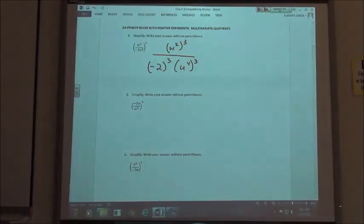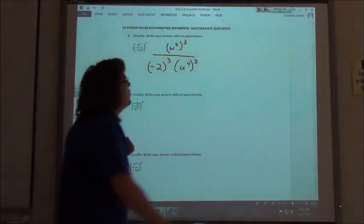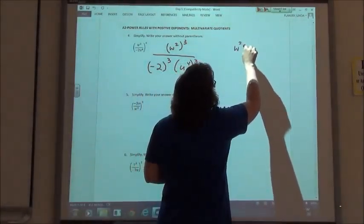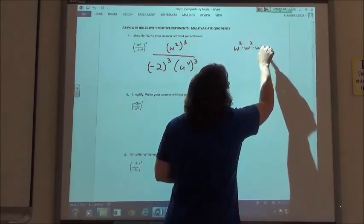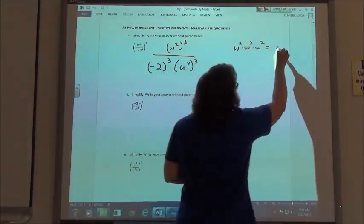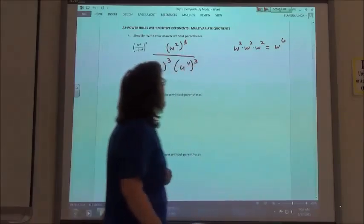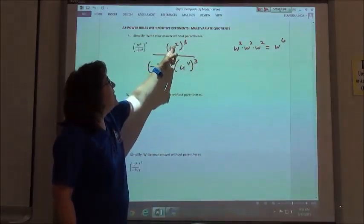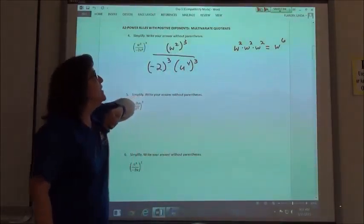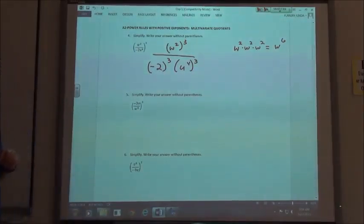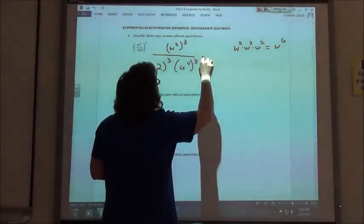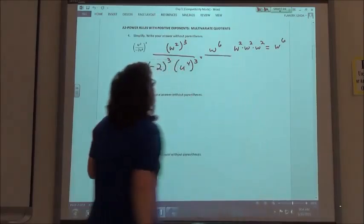So we said with our power rule, w squared to the third power means I'm taking w squared times w squared times w squared. I add my exponents there and I get w to the sixth power. My power rule says if I'm raising to a power, I can just go ahead and multiply those exponents. So I'm going to have w to the sixth power up on top.